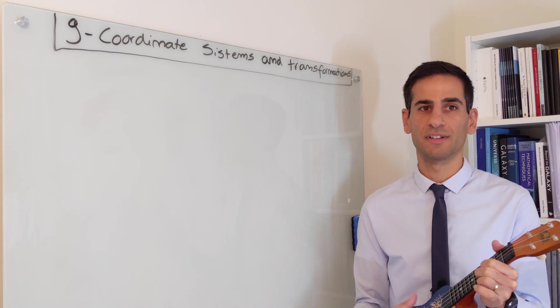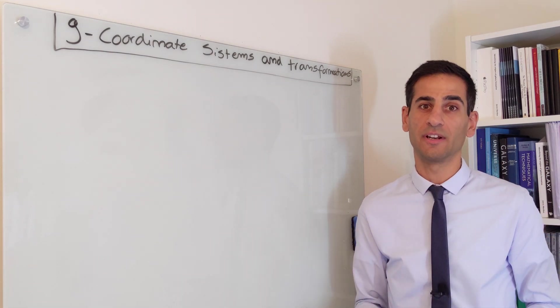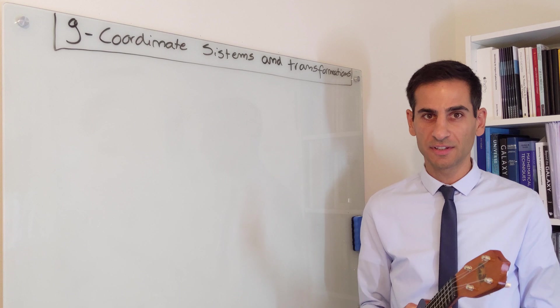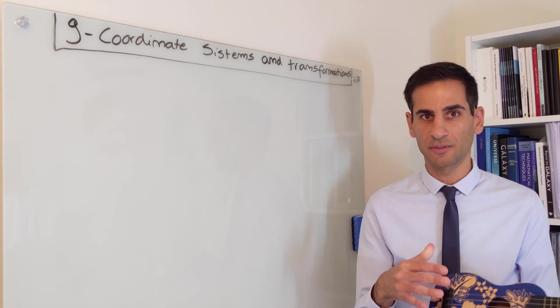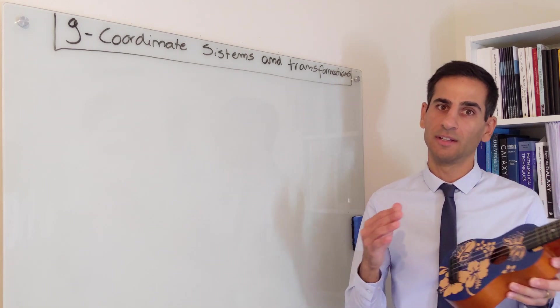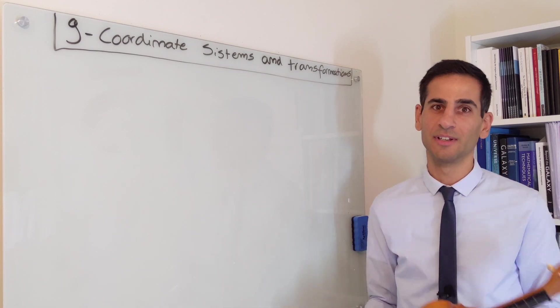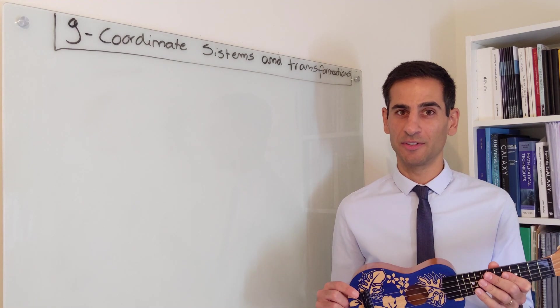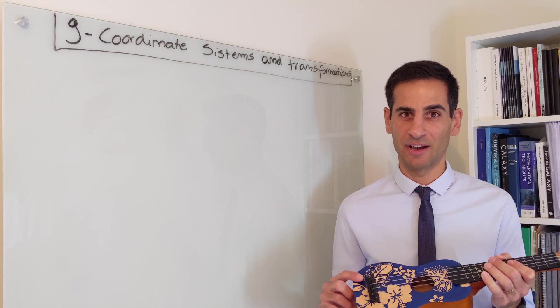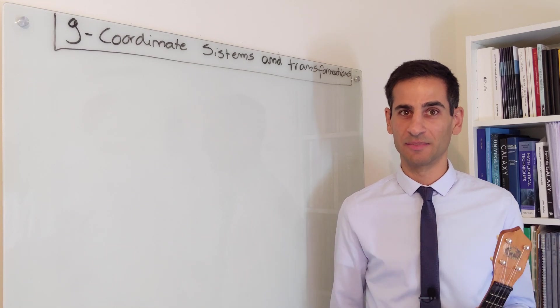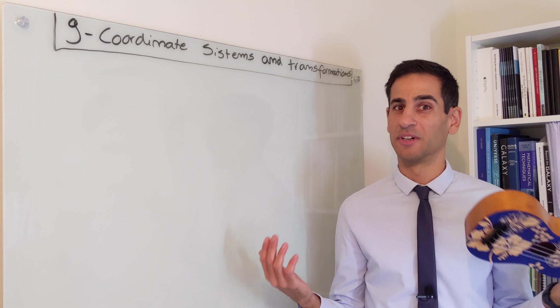We're back for section 9 where we're going to have a look at coordinate systems and how to convert from one coordinate system to the other. For example, the ukulele coordinate system to the whiteboard coordinate system. I must warn you that the ukulele is starting to have its own will and sometimes it may appear in very weird places.